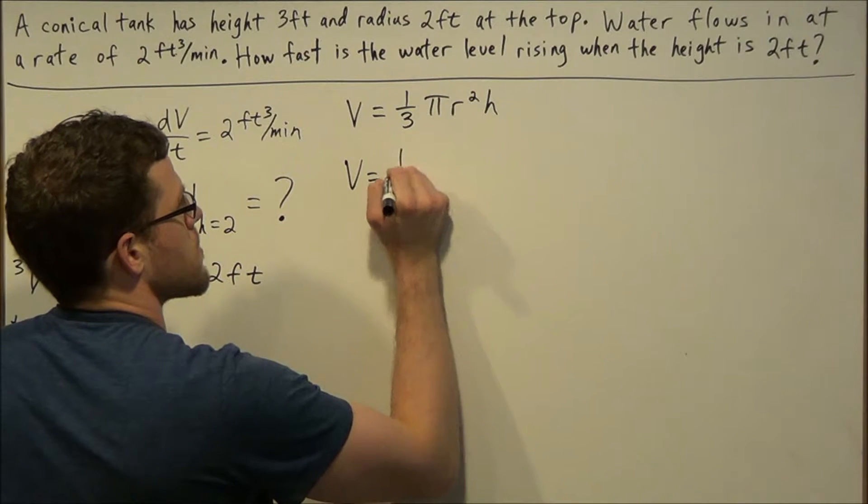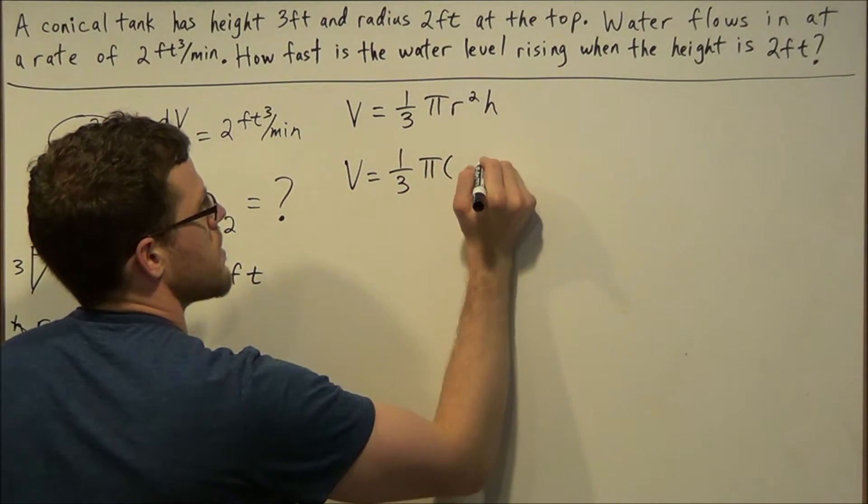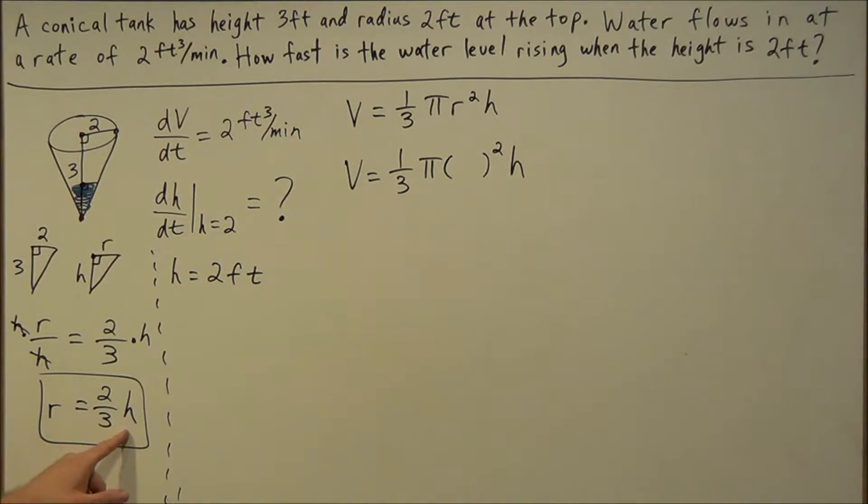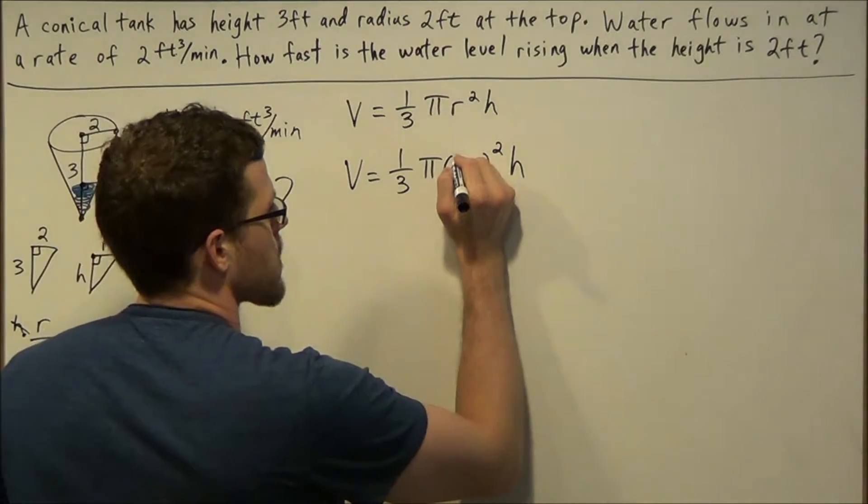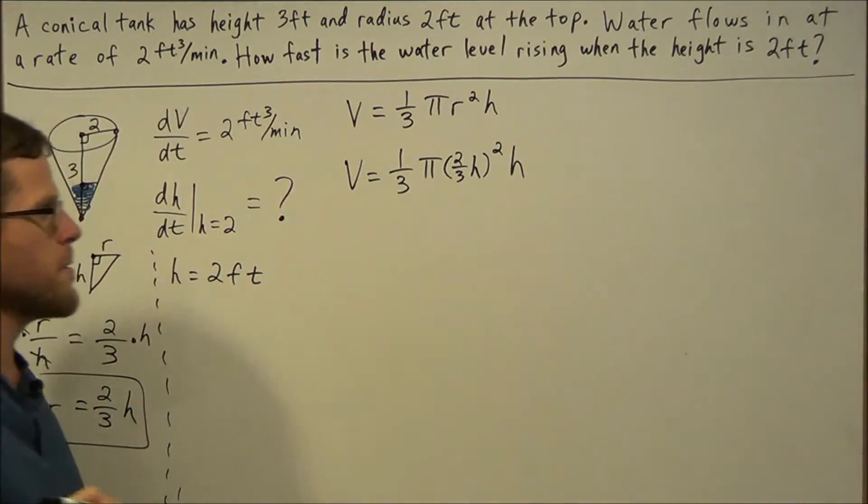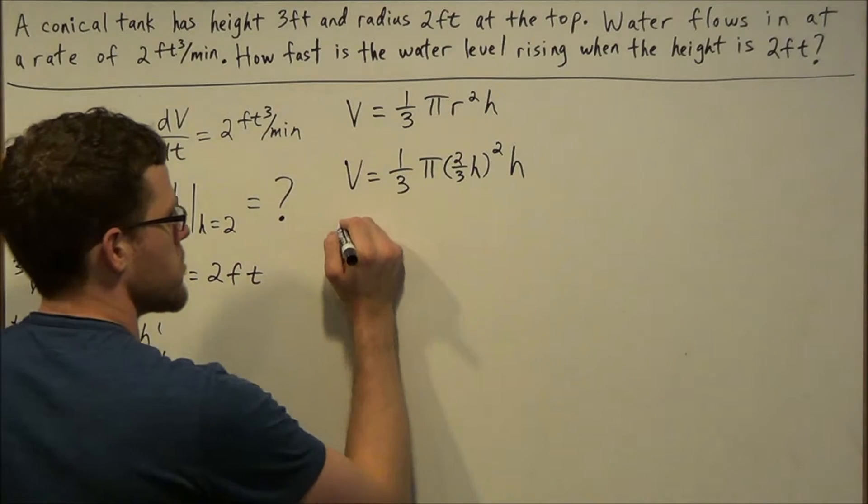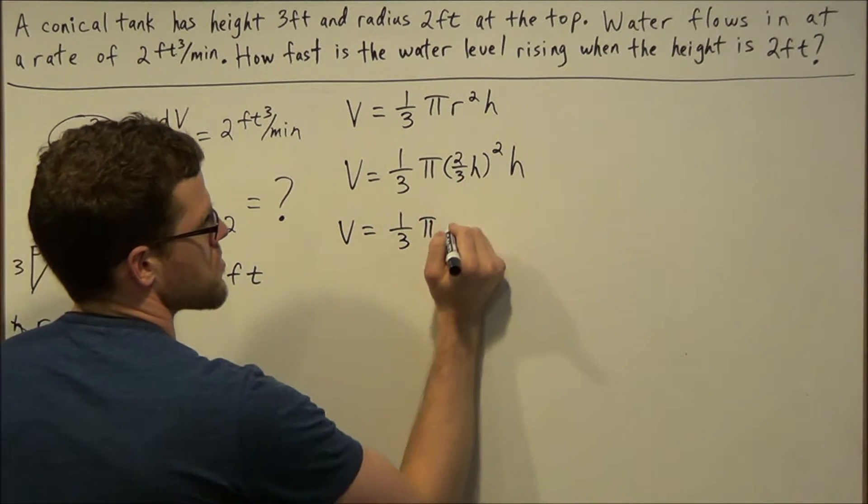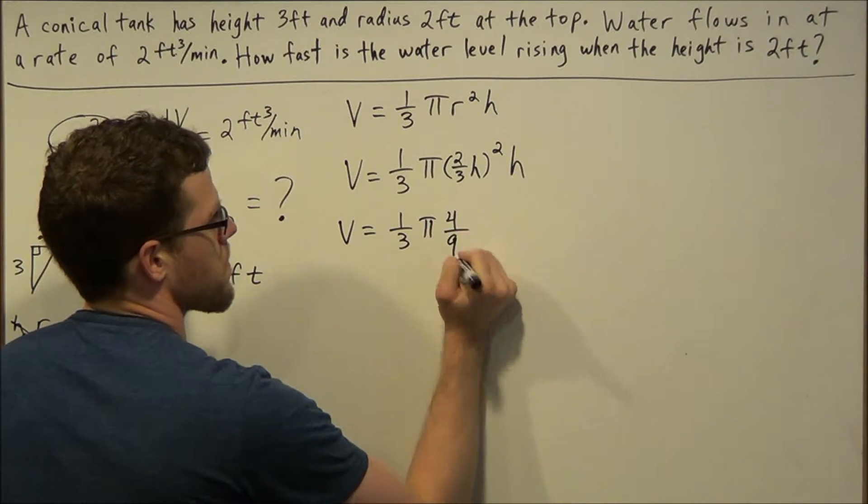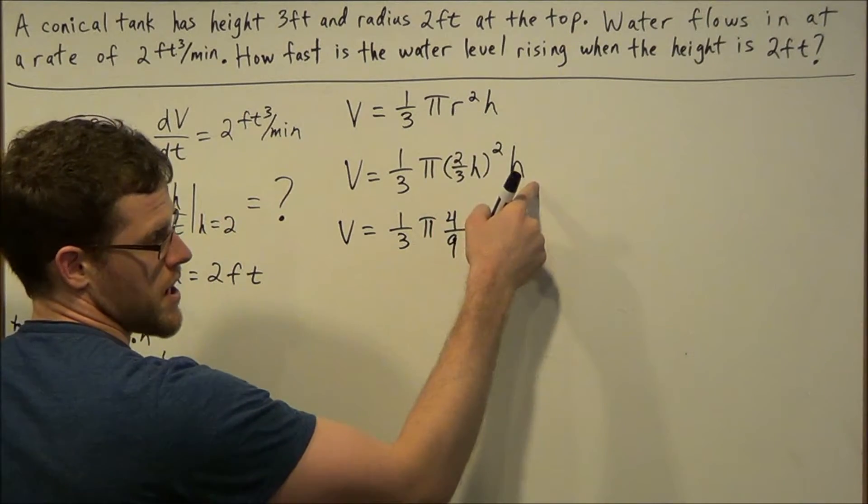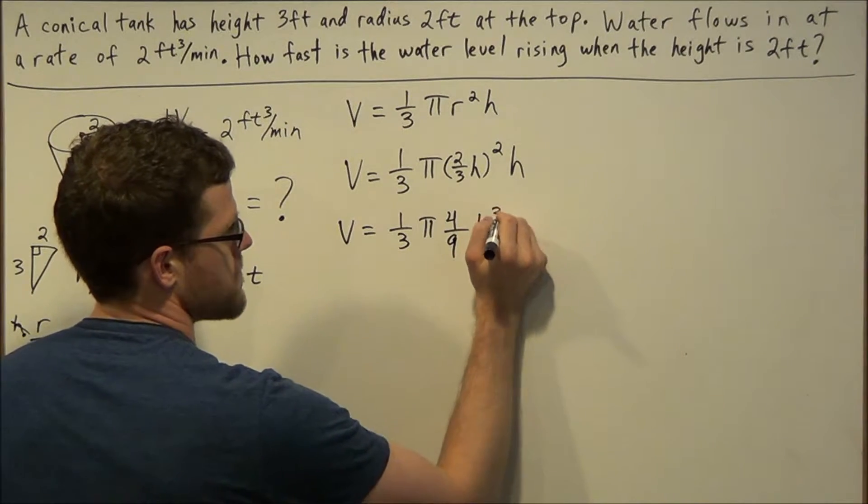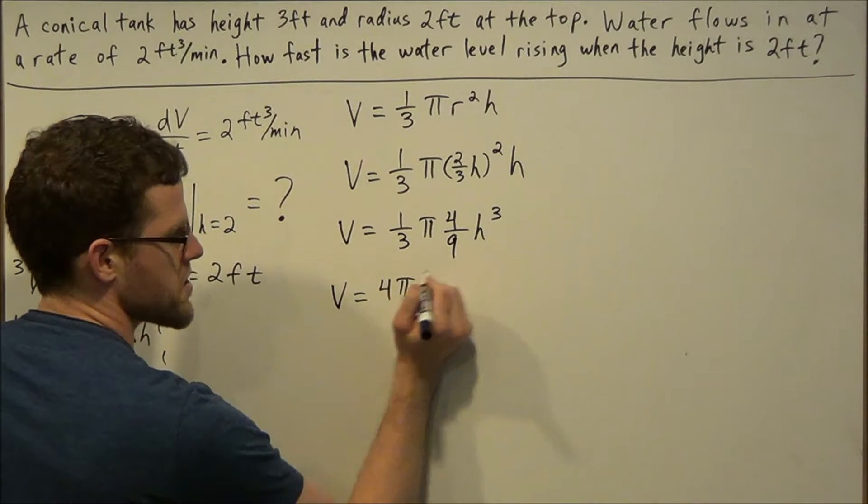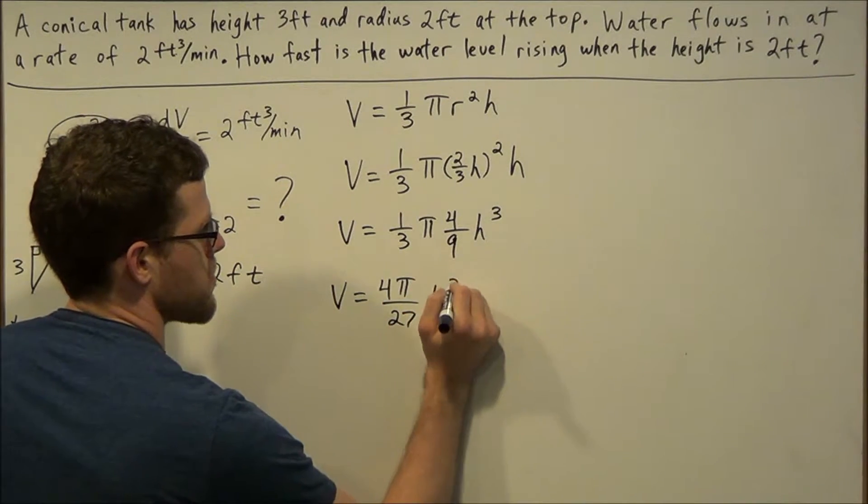We'll have (1/3) times π times r squared times h. But instead of r, we're going to replace r with (2/3)h. We get to this step here, and now we could just simplify the right side a bit. We're going to have V = (1/3)π, and now (2/3) times (2/3) is 4/9, h squared times h is h to the third power. So we could write this as V = (4π/27)h³.